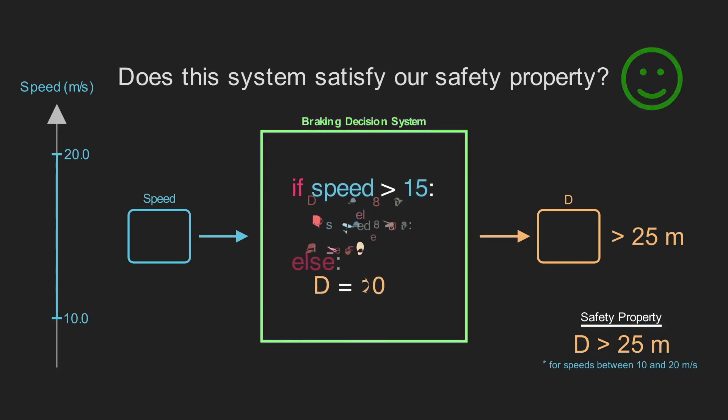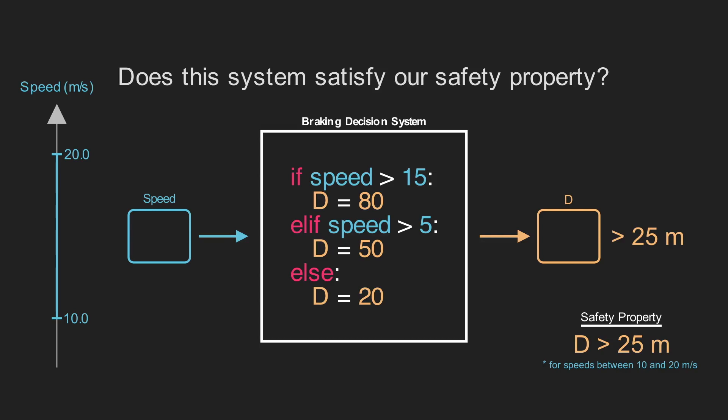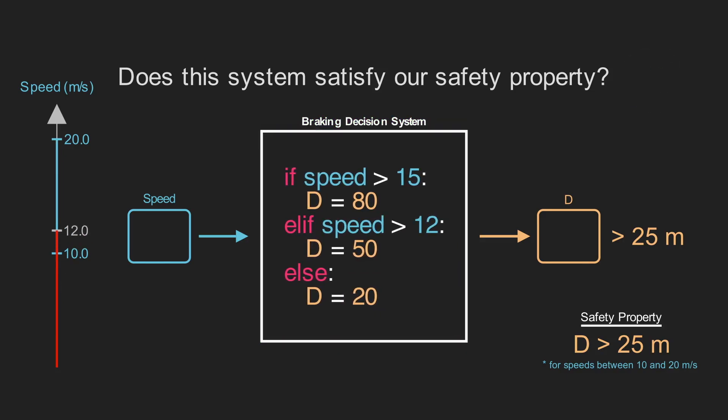Let's change the code to make things a bit more interesting. Now do we satisfy our safety property? Our system could output a number less than 25 now, but only for inputs that are less than 5. Since this does not overlap with the range of inputs we care about, our safety property is still satisfied. If we instead output 20 for inputs less than 12, we now have a set of inputs in the range we care about that output a value less than 25. So our system no longer satisfies our safety property.